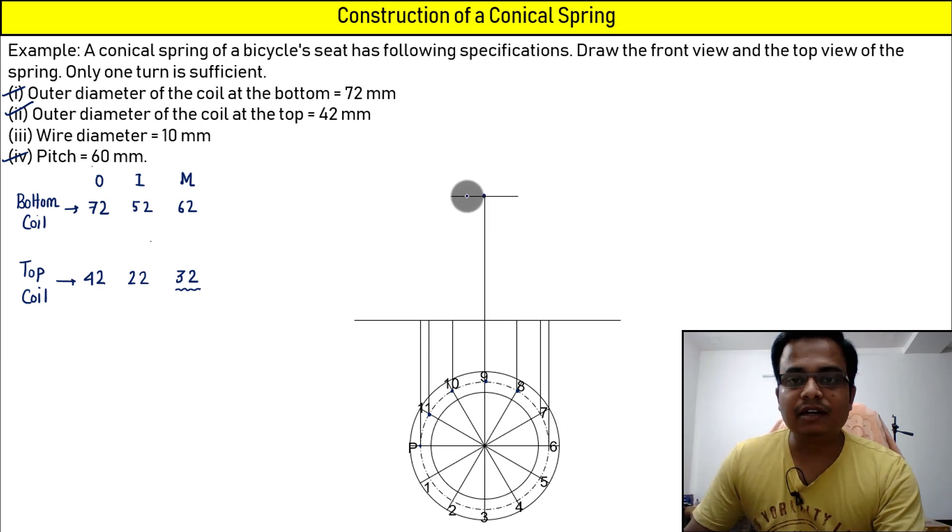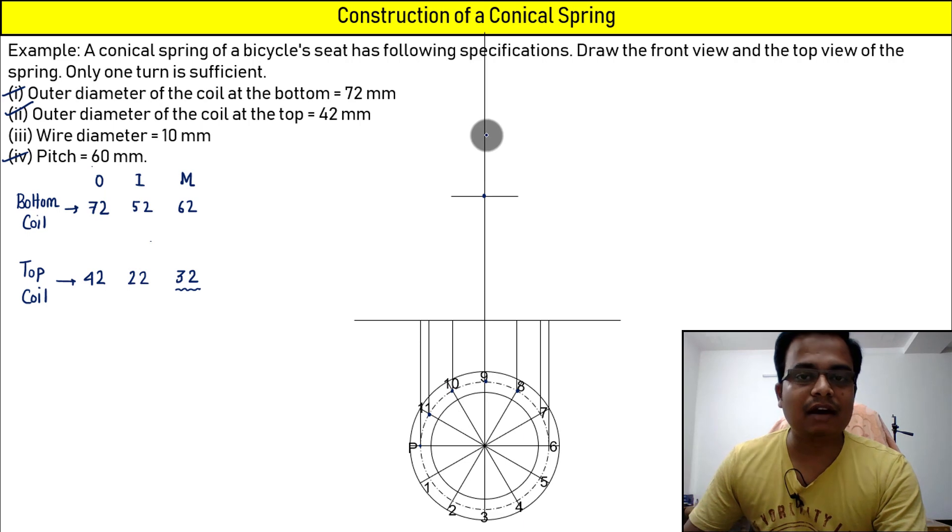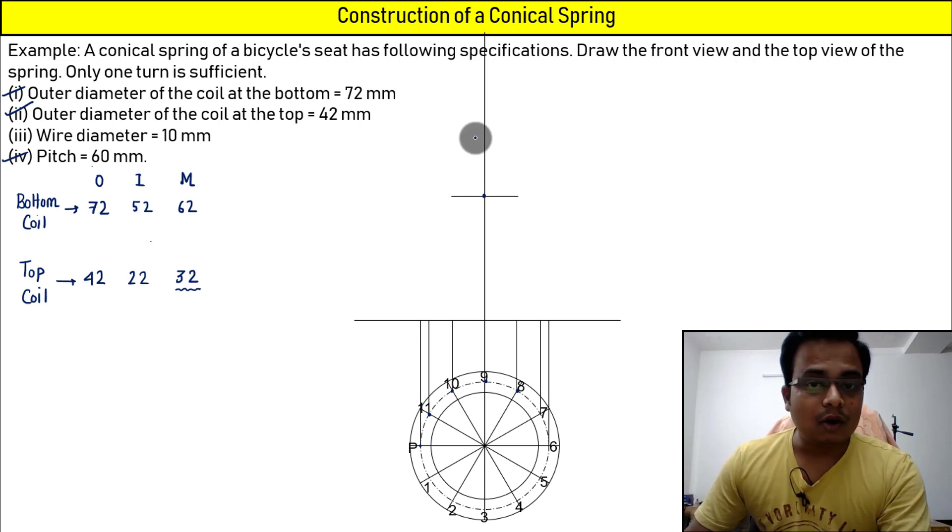That means from this point, 16 towards the right and 16 towards the left. Let's join them, or let's produce this further. And somewhere along this line will have the apex of the cone.